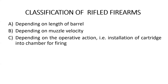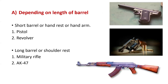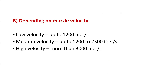The first one, A, is depending on length of barrel. Short barrel or hand arm — they are pistol and revolver, as you can see in the first two pictures. Long barrel or shoulder rest — that is military rifle or AK-47.